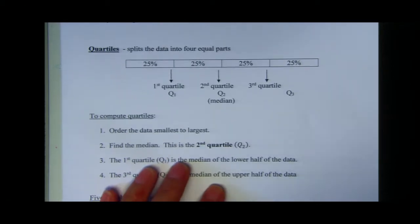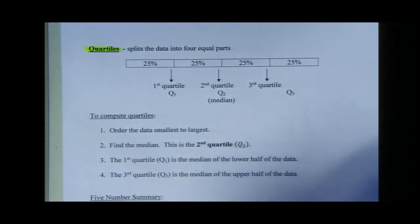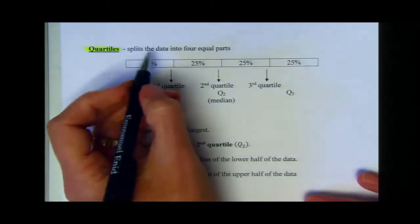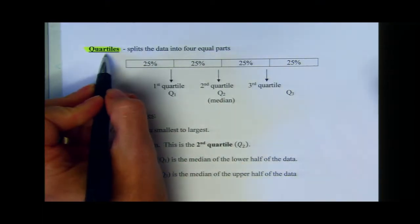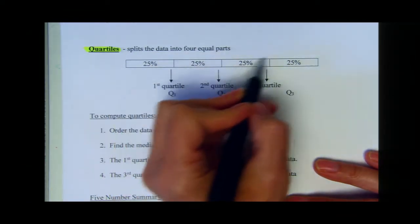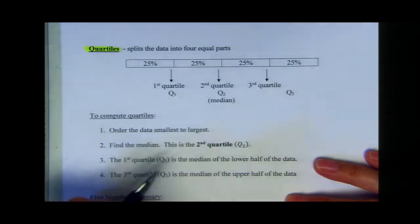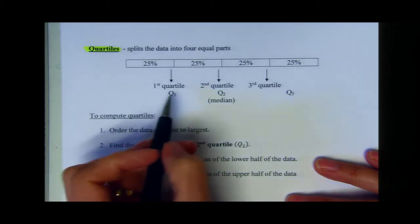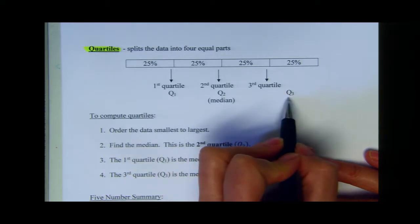Now we're going to look at what are called quartiles, which splits the data into four equal parts. An easy way to remember that: quartiles — think quarters — four quarters make a dollar. So you take your set of data and divide it into four equal parts, each part representing 25% of the data. To do that, we have to find quartile one, quartile two, and quartile three.